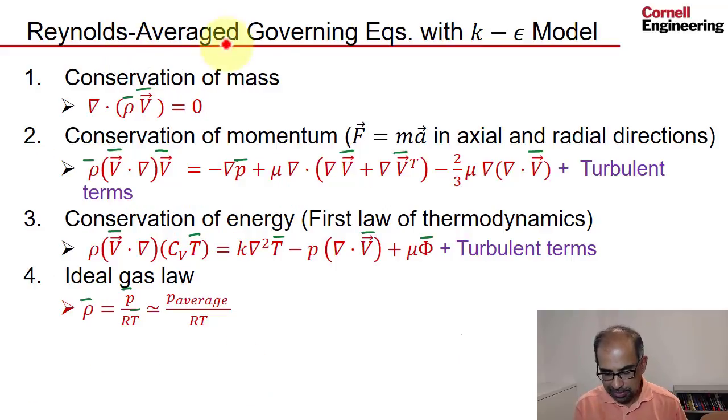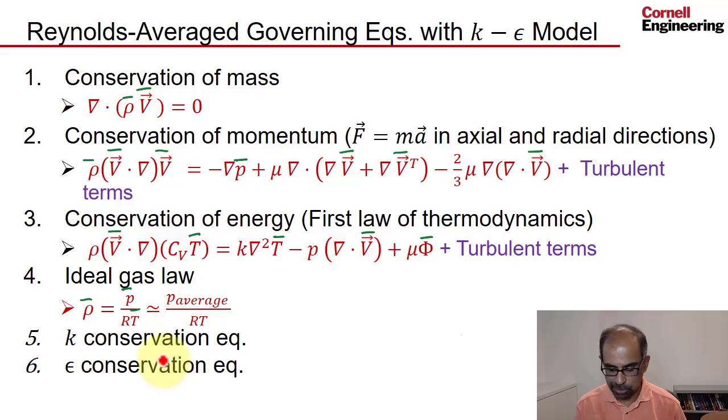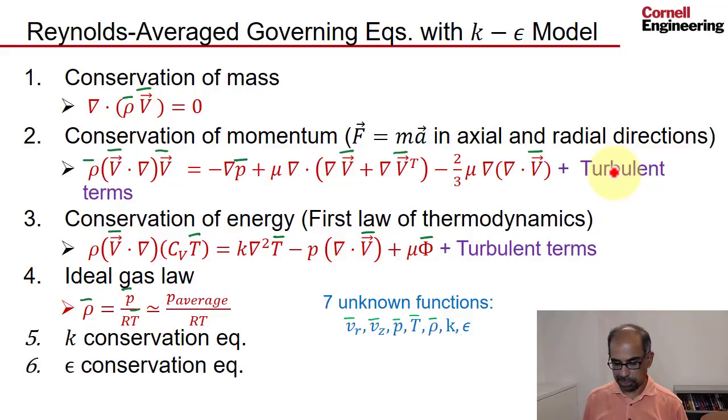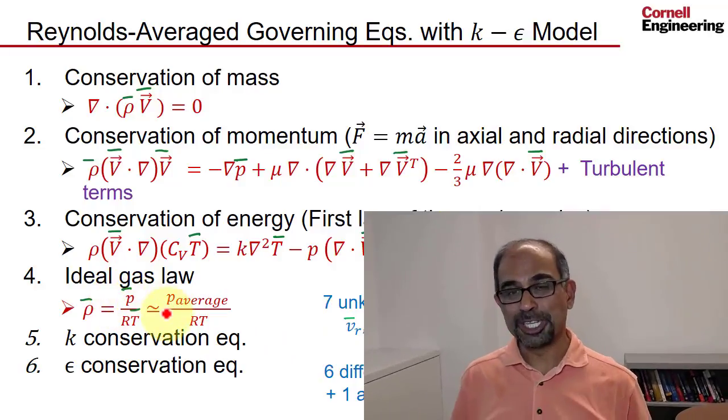So the final set of Reynolds average governing equations with the k-epsilon turbulence model looks like what we had before plus the k and epsilon conservation equation. So you have two additional differential equations which you'll use to calculate these terms, and that's a closed set of equations. Now we have seven unknown functions. We have the five we had before, the Reynolds average versions of it, and then you have k and epsilon. We have six differential equations plus this one algebraic equation. That's the system we have to solve, and aren't we glad we have a tool like Fluent that will solve it for us.